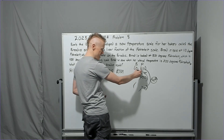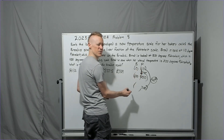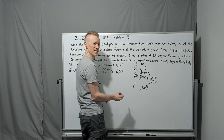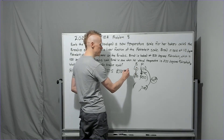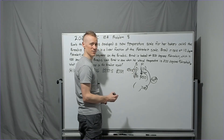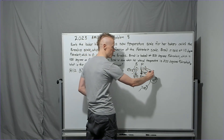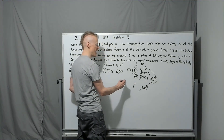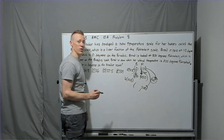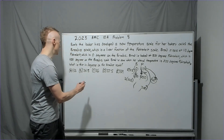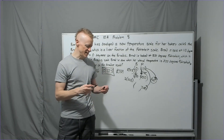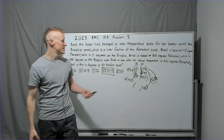Going from 0 to 100° Brettis is eight groups of 30°F. So each group of 30°F corresponds to 100/8 = 12.5° Brettis. From 110 to 200°F is 90°F, which is three groups of 30. Three groups of 12.5 = 37.5°. The answer is 37.5° on the Brettis scale.